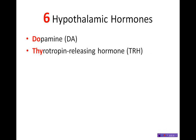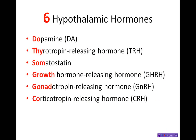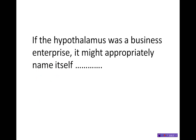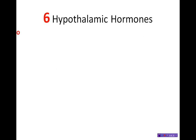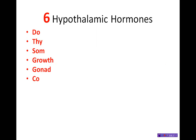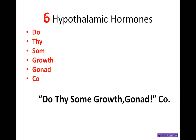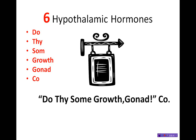Six hypothalamic hormones — focusing now on the red letters. If the hypothalamus was a business enterprise, it might appropriately name itself the following. Keep in mind that this is a mnemonic within the mnemonic; if you can think of a better one that works for you, that's fine, but you need one that puts the hypothalamic hormones in this order. The hypothalamus plays a key role in the onset of puberty. Going back to those red letters: Do, Thy, Some, Growth, Gonad, Co. I say that the hypothalamus would call itself the 'Do Thy Some Growth Gonad Company' — and that works for me.